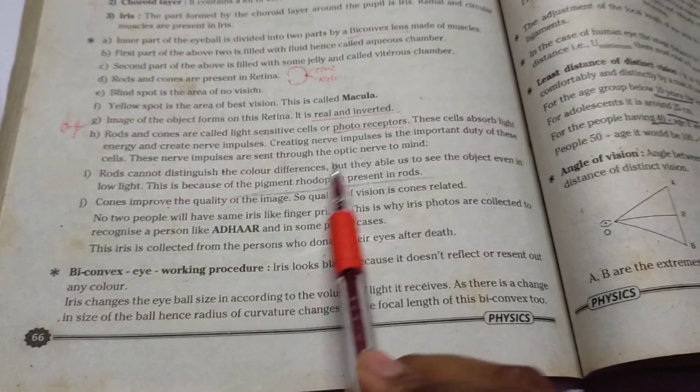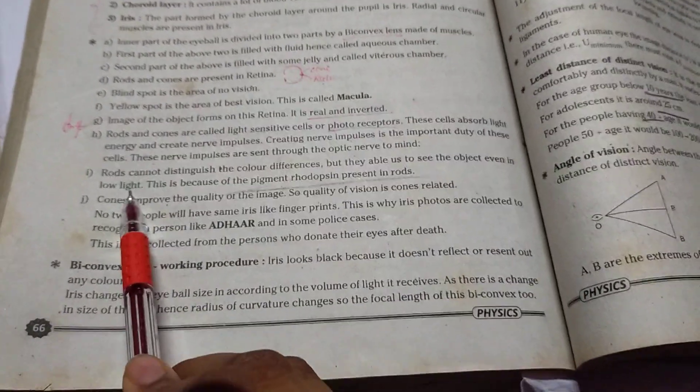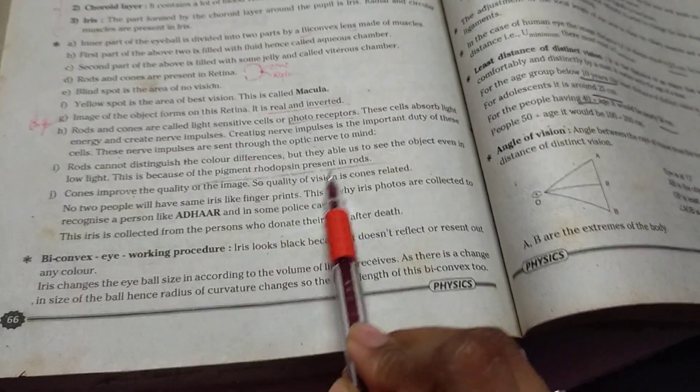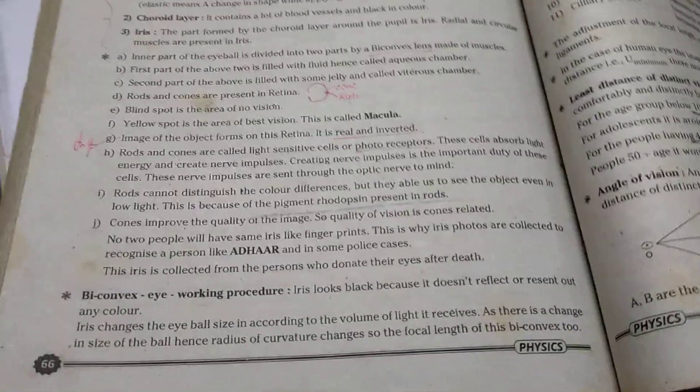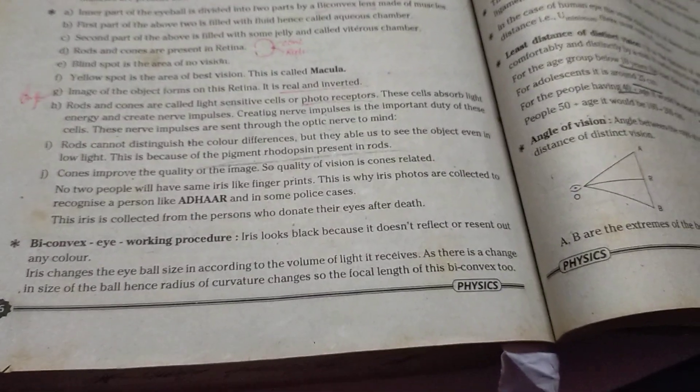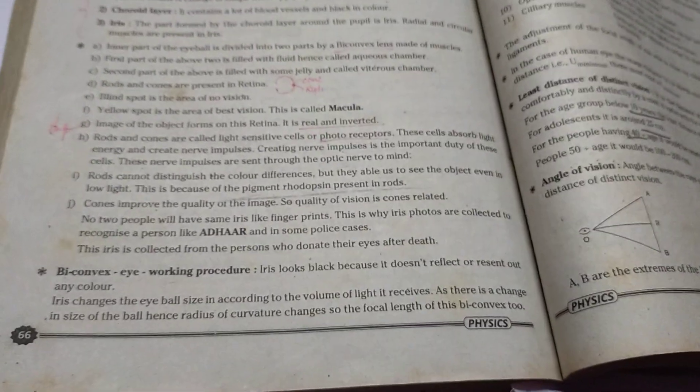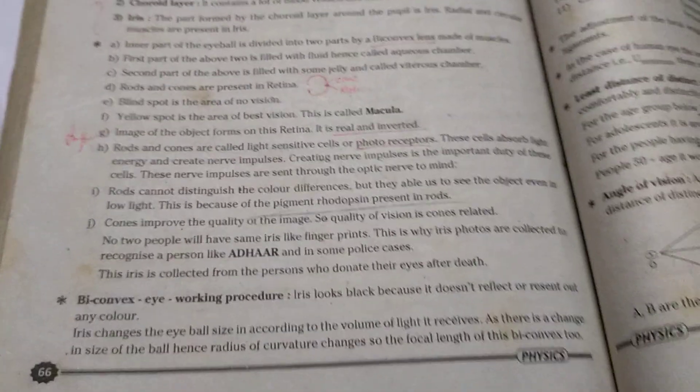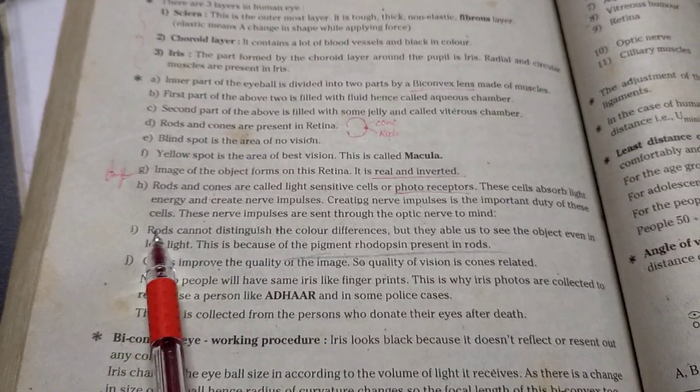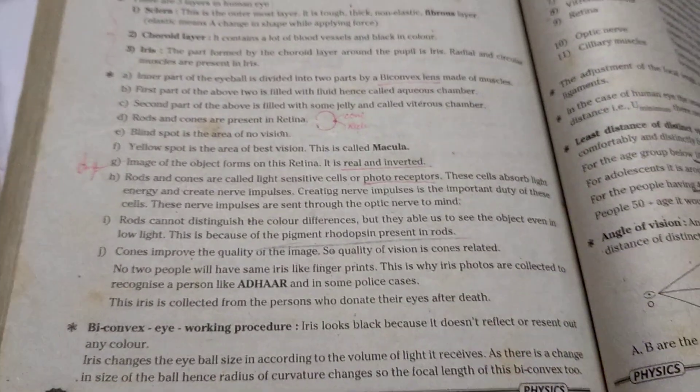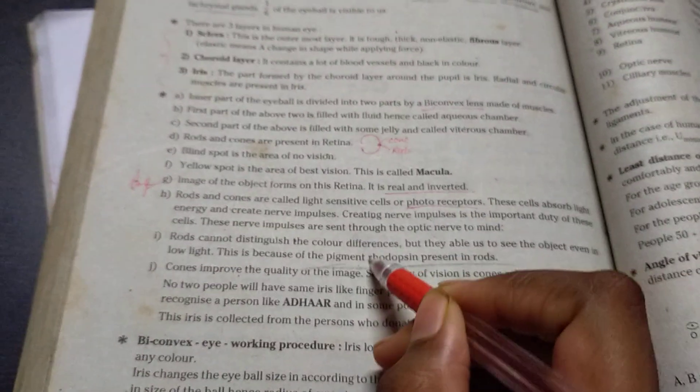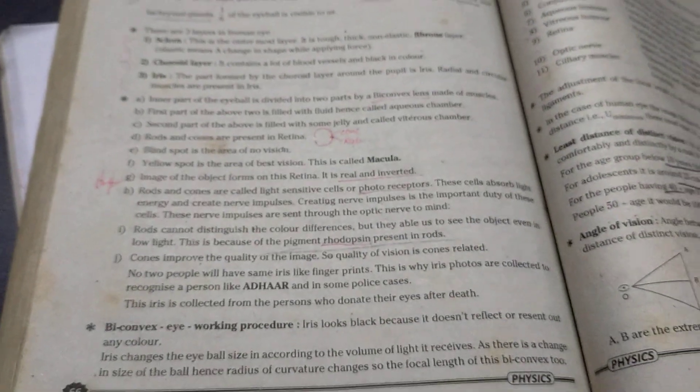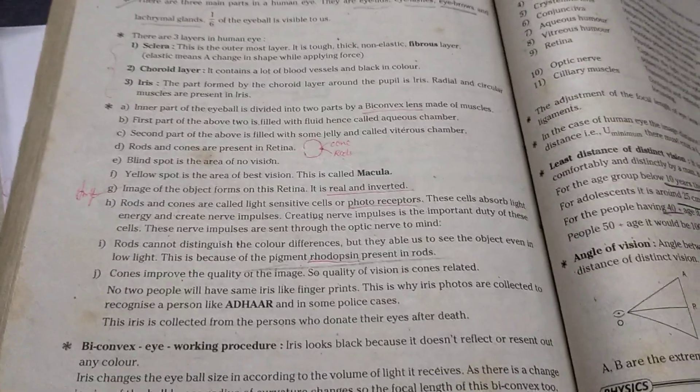Rods cannot distinguish the color differences but they enable us to see objects even in low light. This is because of the pigment rhodopsin present in rods. Yeah guys I'll tell you an example. When the power cut, you can see some objects. What's the reason about it? Now you can get the clarity of it. Rods have pigment rhodopsin. So it will help us to see any object in the low light too.